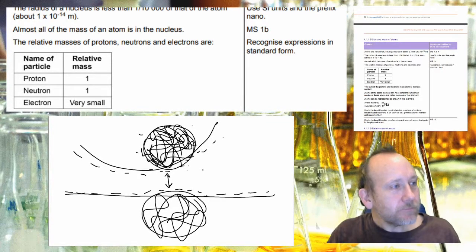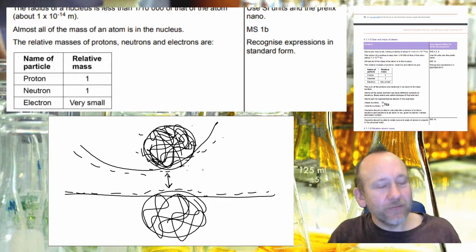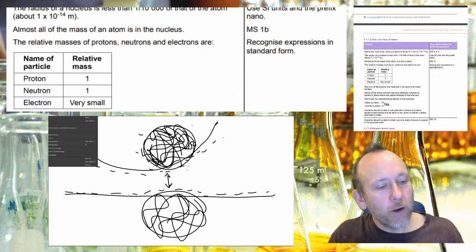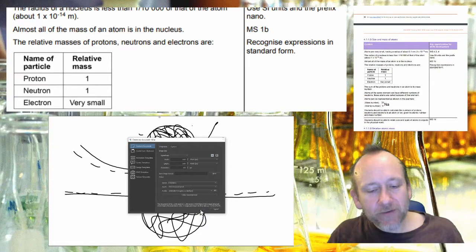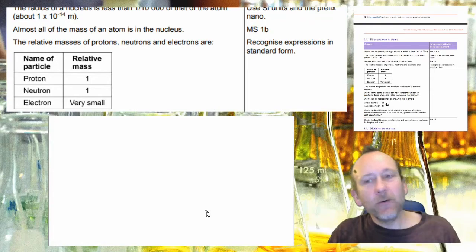So then we need to learn that the relative mass of protons and neutrons which is of course what is in the nucleus is one. And again you can express that in kilograms and the number would be incredibly small and very difficult to handle.